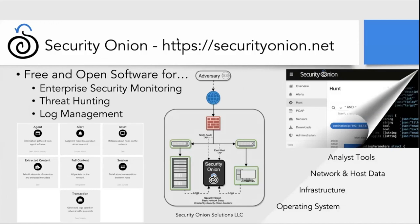So briefly, what is Security Onion? Security Onion is a free and open platform for enterprise security monitoring, threat hunting, and log management. You deploy Security Onion to your network, monitor your network traffic, and collect logs from your servers, desktops, and other endpoints. You bring all that back and use it to peel back the layers of your network and to make your adversaries cry.